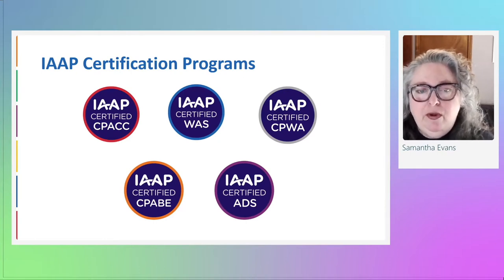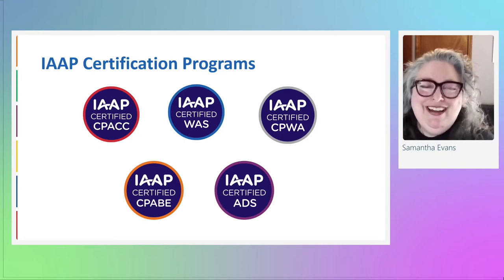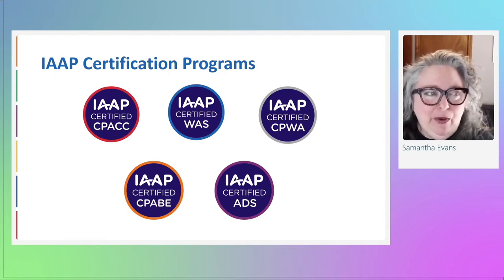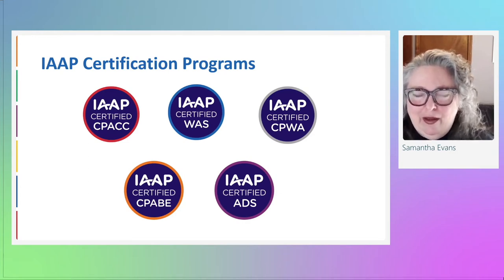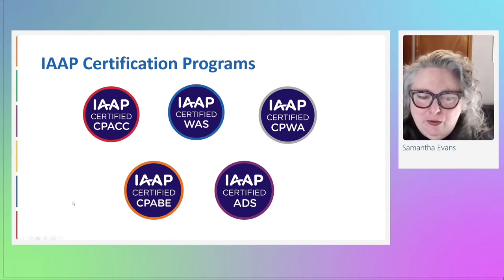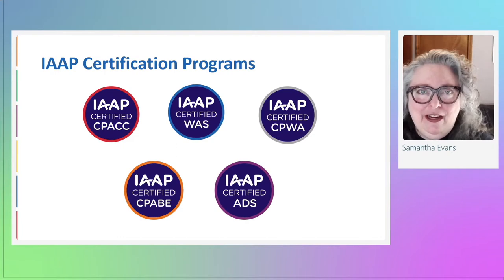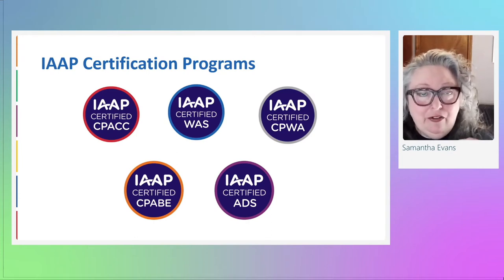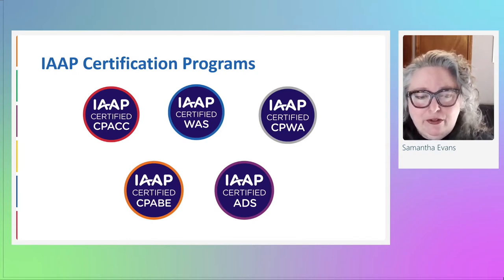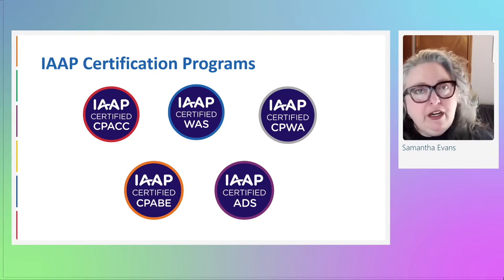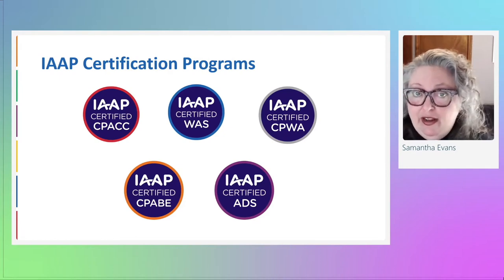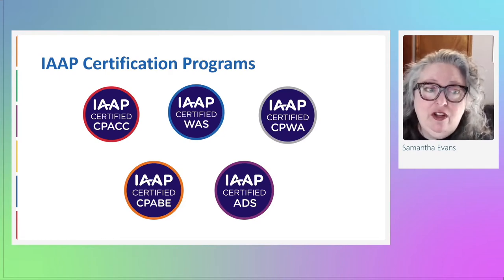The middle circle in the top row is WAS — Web Accessibility Specialist. The third on the top row is CPWA — Certified Professional in Web Accessibility — with a silver circle, earned when someone earns both CPACC and WAS. On the bottom row is CPABE, the Certified Professional in Accessible Built Environments, and IAAP Certified ADS — Accessible Document Specialist — with a purple exterior circle.